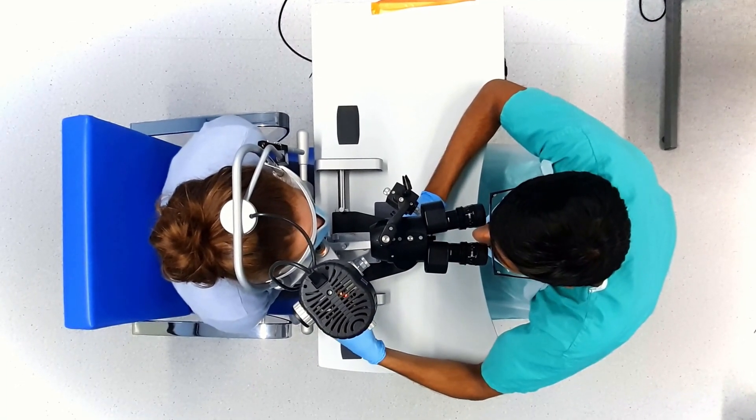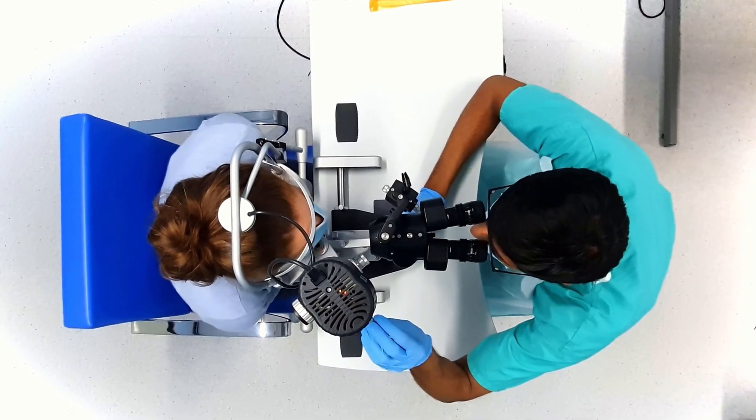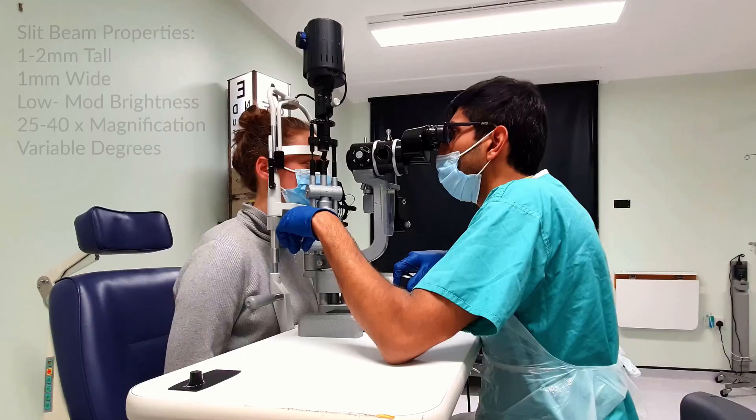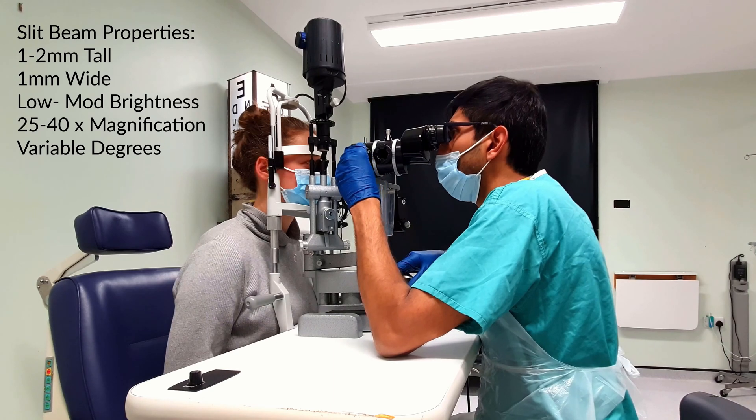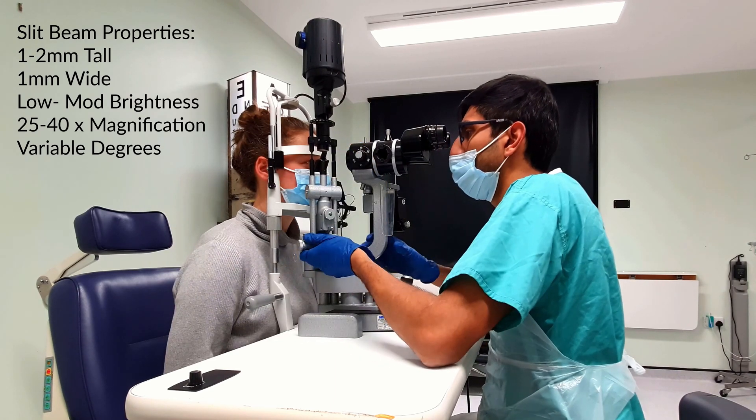To look at the corneal endothelium, start with the optical section of the cornea. Adjust the illumination angle until you see a bright reflection. You want the angle of incidence to equal the angle of reflection.